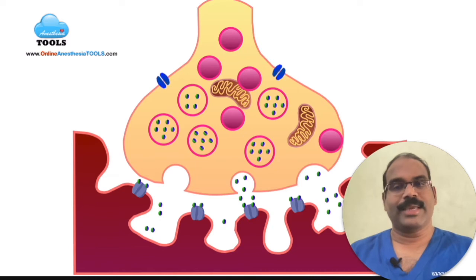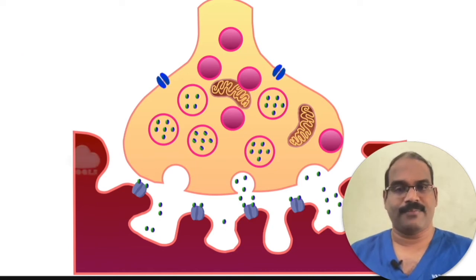Here you can see acetylcholine diffuses across the synaptic cleft and binds with acetylcholine receptors located on the crest of the junctional folds of the postsynaptic sarcolemma.